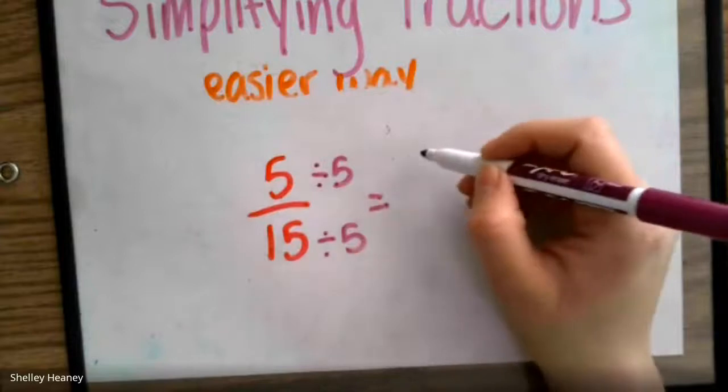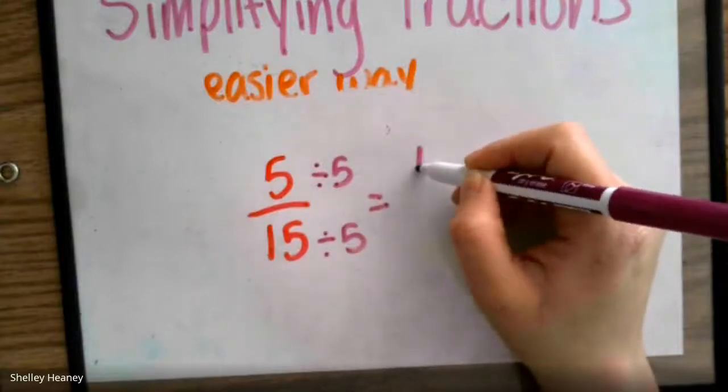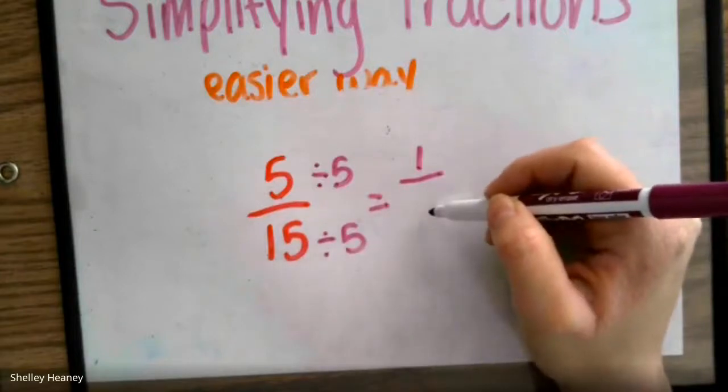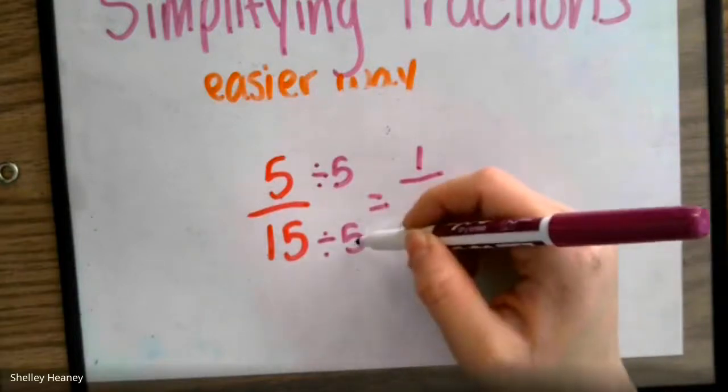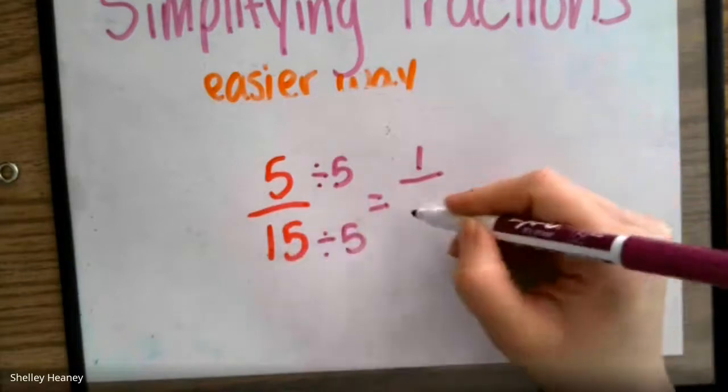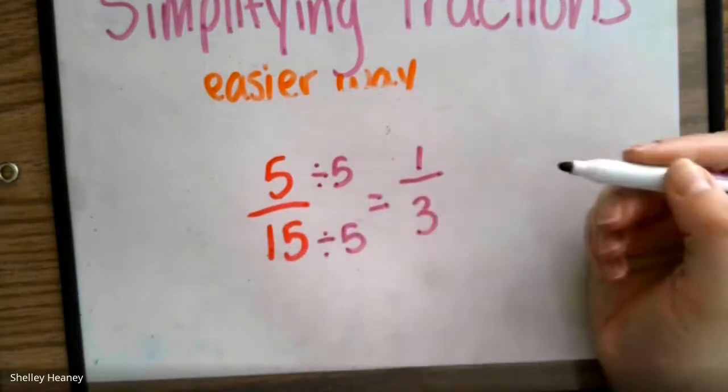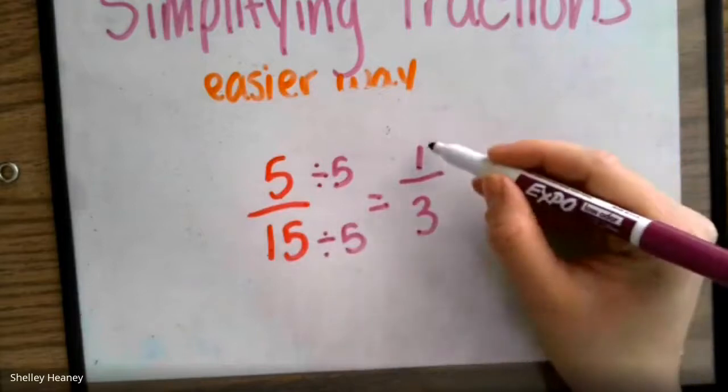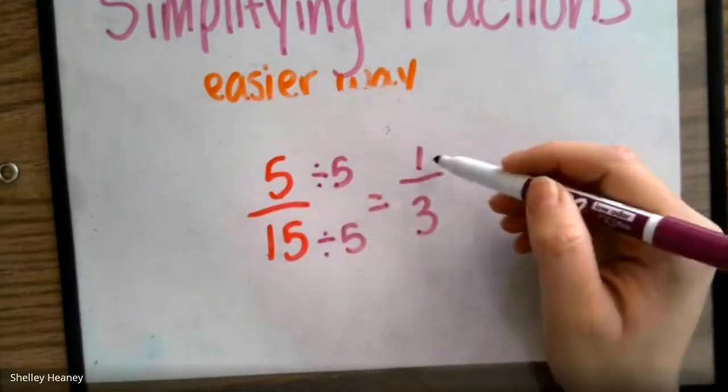5 divided by 5 would give us 1. 15 divided by 5 gives us what? If we don't know that, what times 5 will give us 15? That number is 3. 5 fifteenths in simplest form would be 1 third.